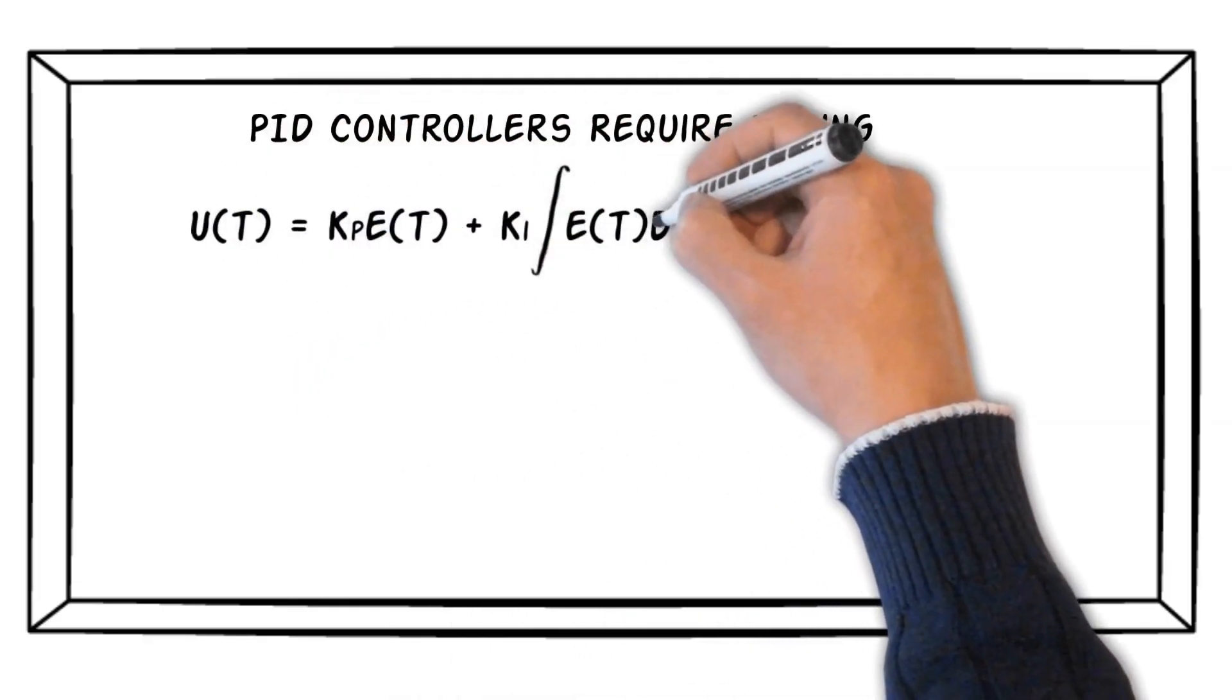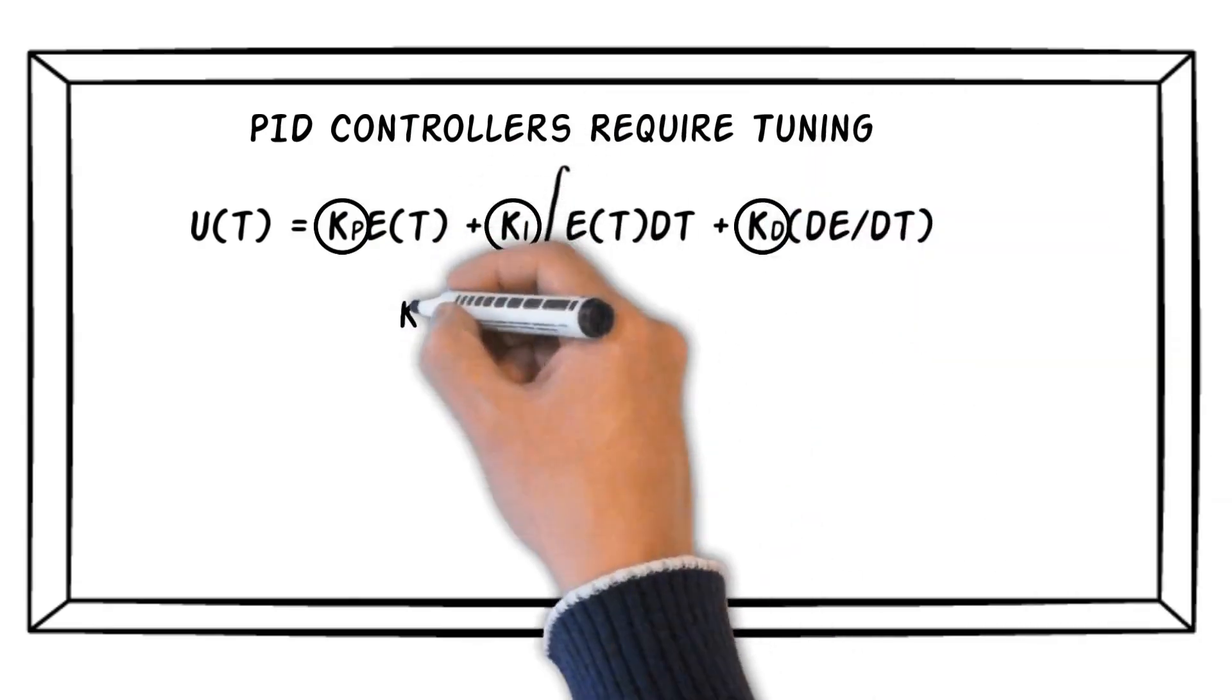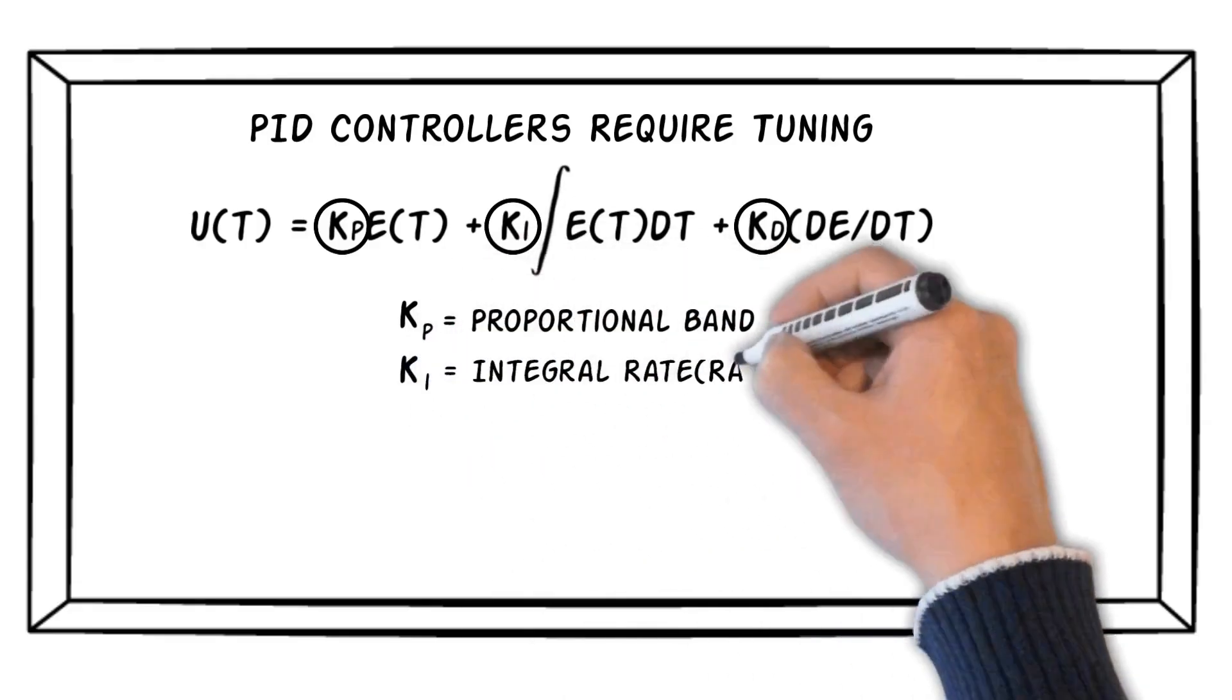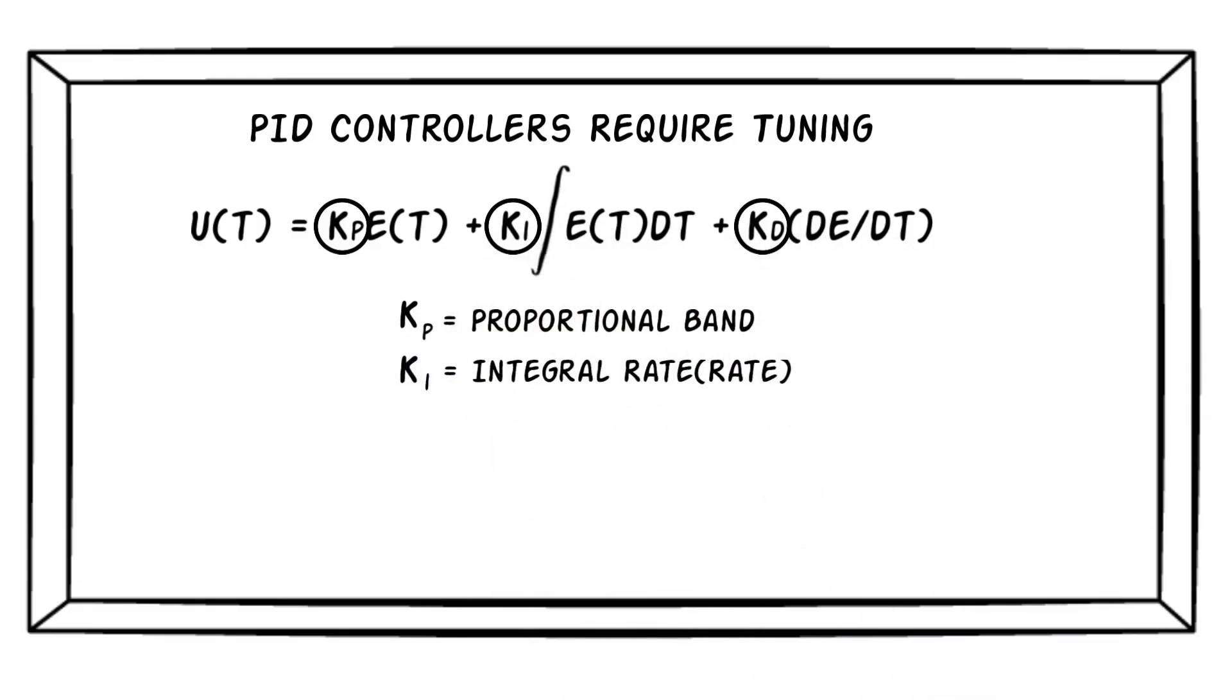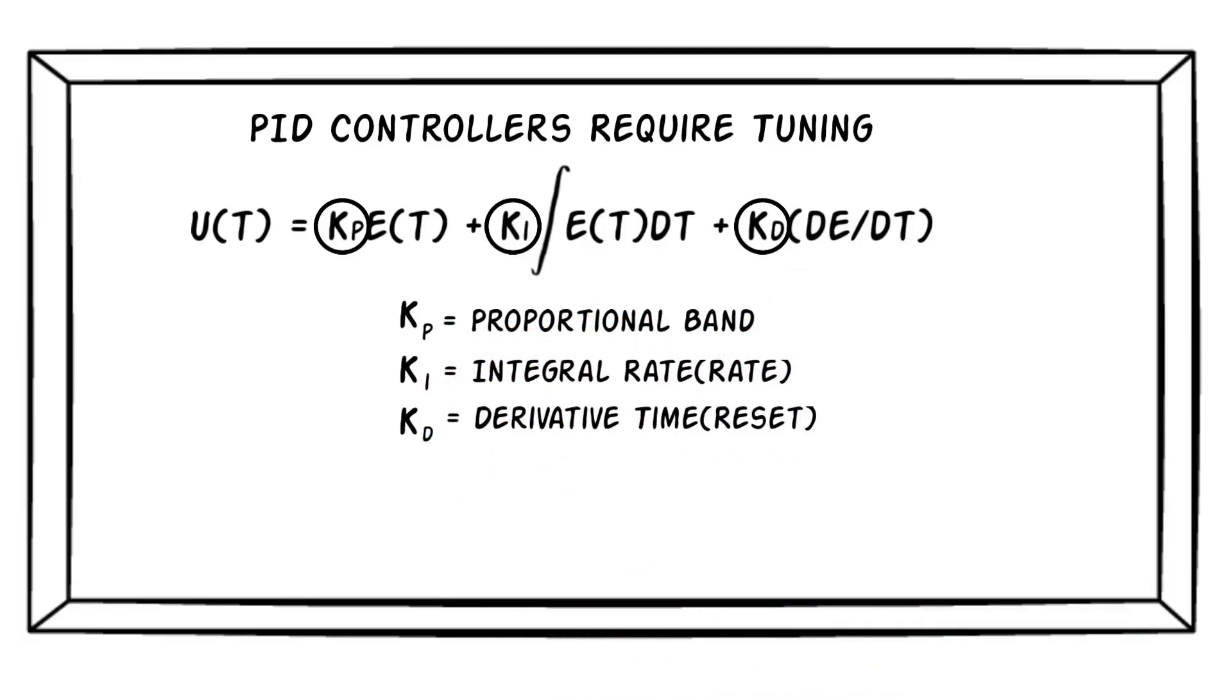You may recall that the equation included three constants. Those constants are Kp, which is the proportional band, Ki, the integral multiplier, which is also called the rate, and Kd, the derivative multiplier, also called the reset. These constants are required to adapt the PID equation to a specific process.